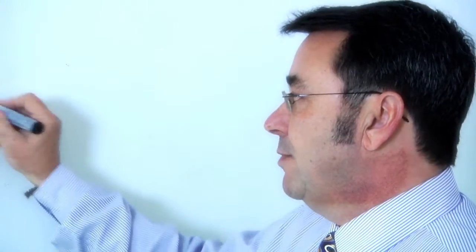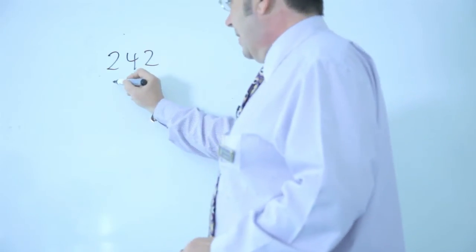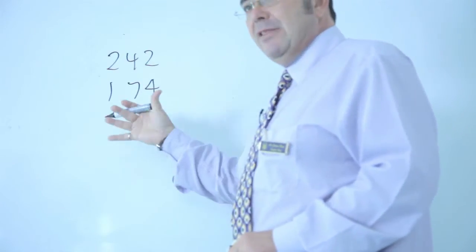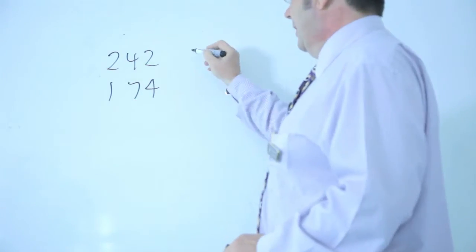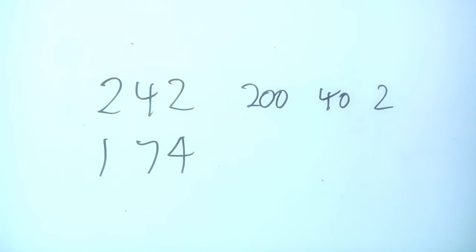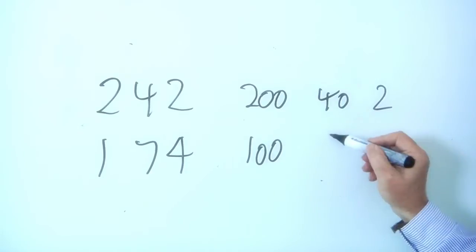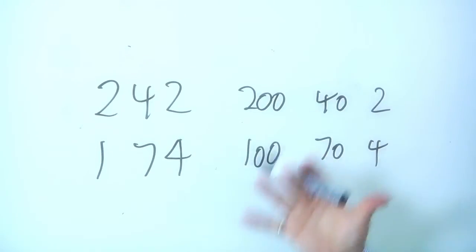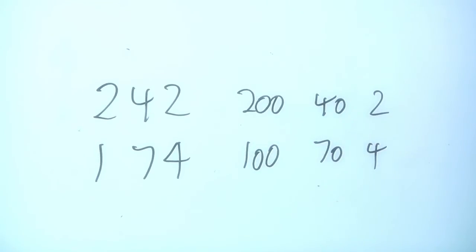If I have 242 take away 174 and I break those down, I partition them into 242 and then 174. I then need to borrow or decompose some of these numbers to help me out.